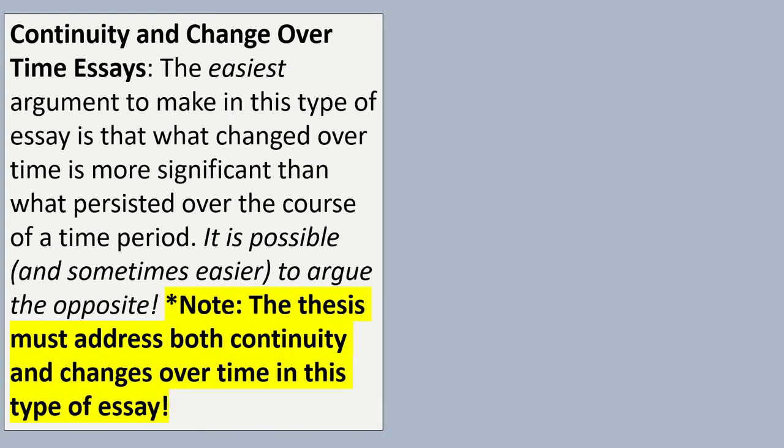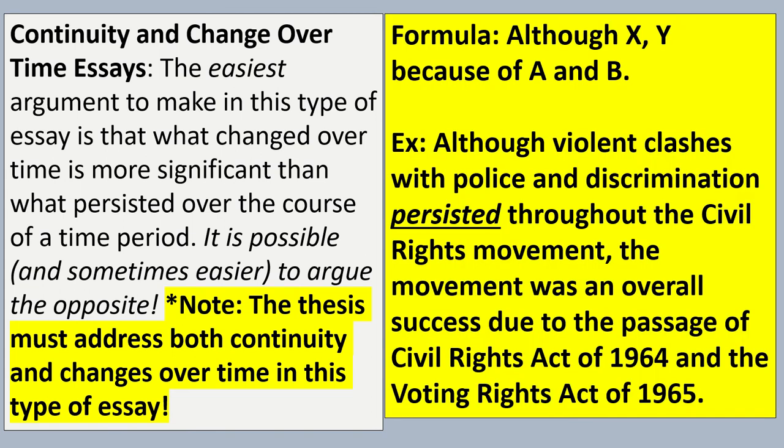Let's look at the third and final thinking skill. This is the third and final type of essay you'll encounter, potentially, on the APUSH exam. Continuity and change over time. What stayed the same and what has changed over time. The easiest argument to make in this type of essay is that what changed over time is more significant than what persisted over the course of a time period. And then, as always, sometimes it's easier to argue the opposite. It's just your preference when you get to that particular essay. The trouble is the thesis has to address both continuity and changes over time. So, here's an example for you. Although violent clashes with police and discrimination persisted throughout the civil rights movement, the movement itself was an overall success due to the passage of the Civil Rights Act of 1964 and the Voting Rights Act of 1965.